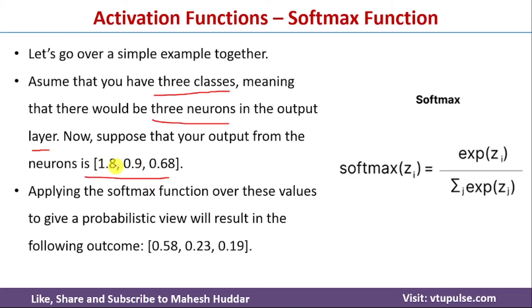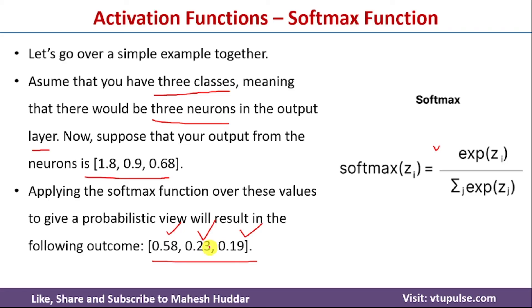Applying the softmax formula, 1.8 is converted to 0.58 — that is, 1.8 (numerator) divided by the sum of all three values. Similarly, 0.9 is converted to 0.23, which is 0.9 divided by the sum of all values. And 0.68 is converted to 0.19. Adding all three gives a total probability of 1.